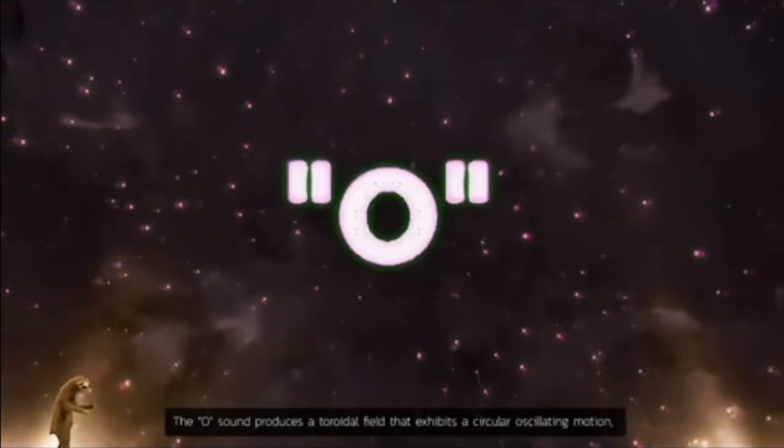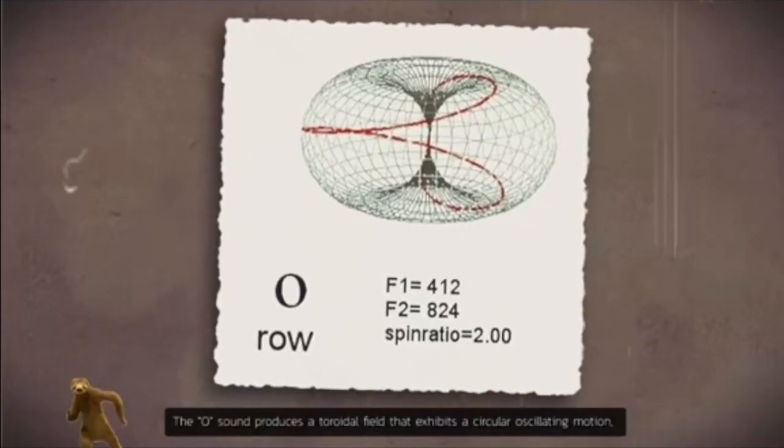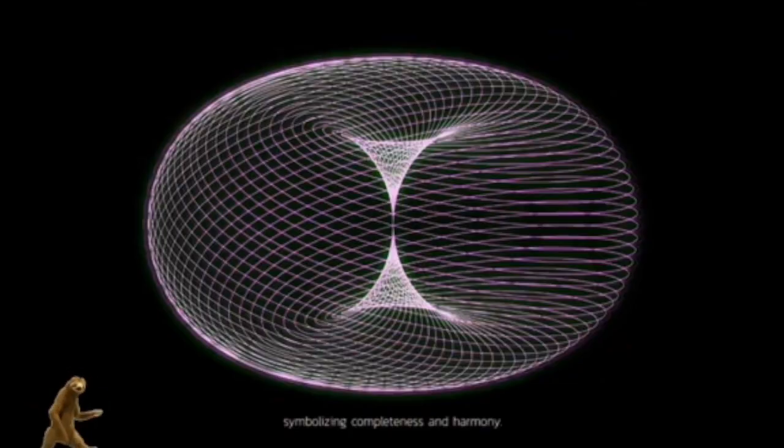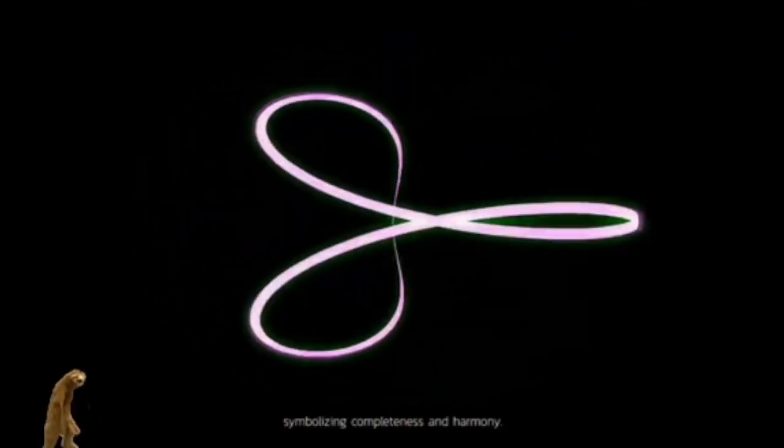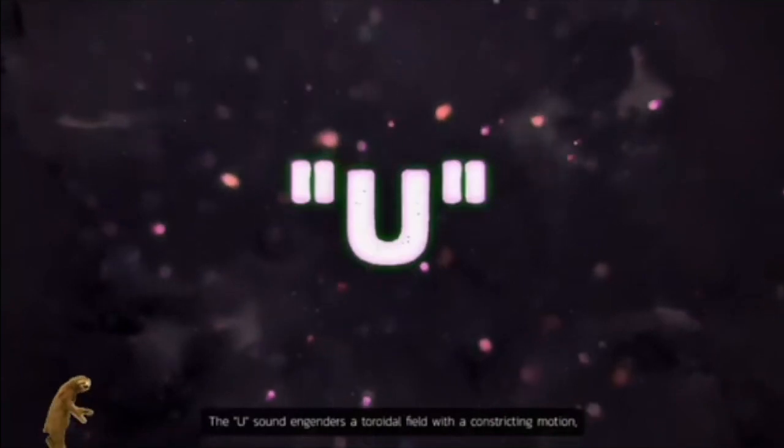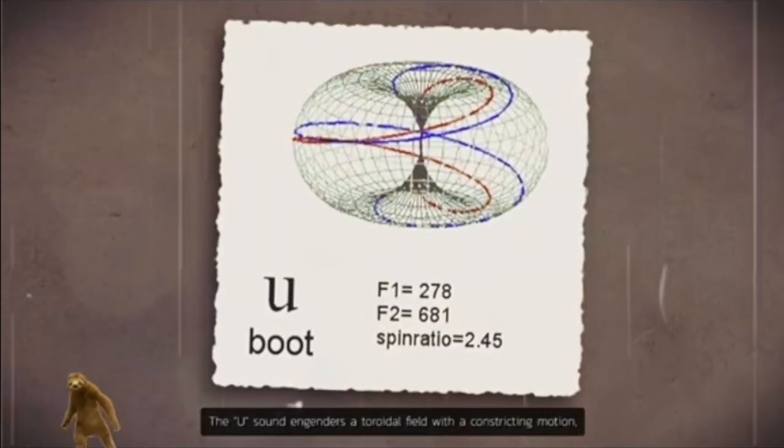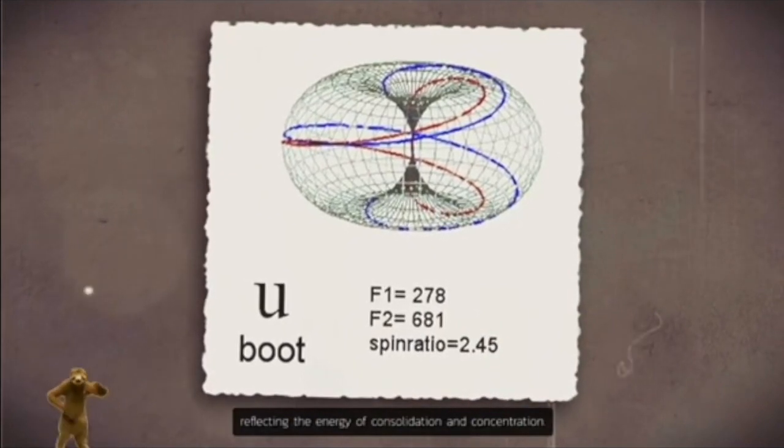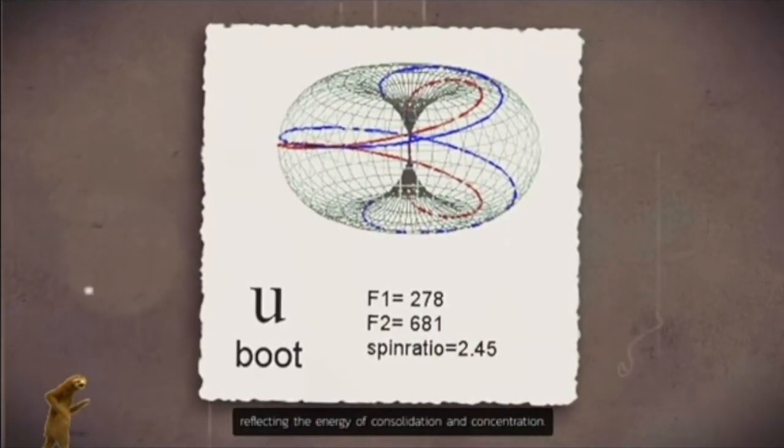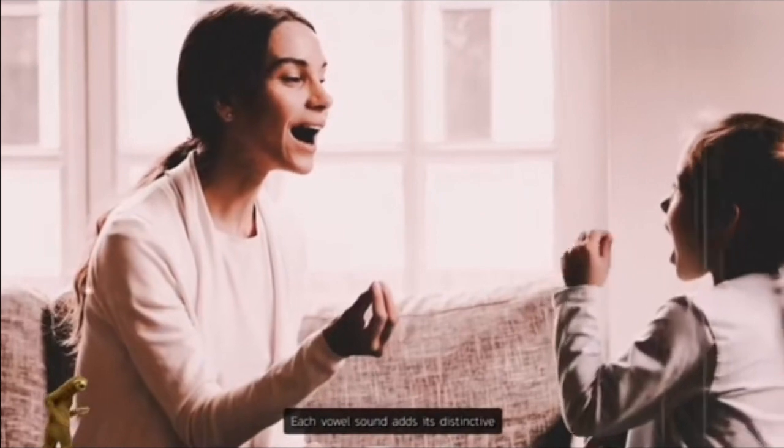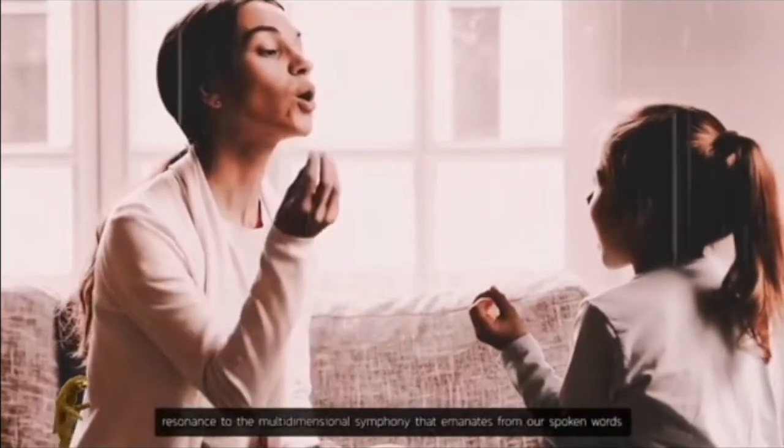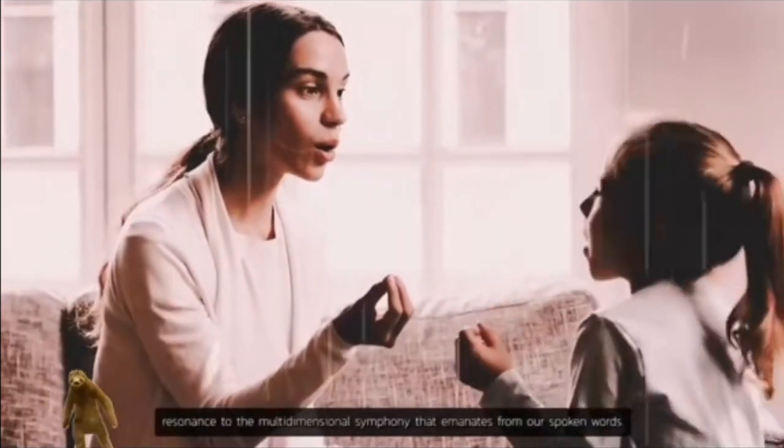The O sound produces a toroidal field that exhibits a circular, oscillating motion, symbolizing completeness and harmony. The U sound engenders a toroidal field with a constricting motion, reflecting the energy of consolidation and concentration. Each vowel sound adds its distinctive resonance to the multi-dimensional symphony that emanates from our spoken words.